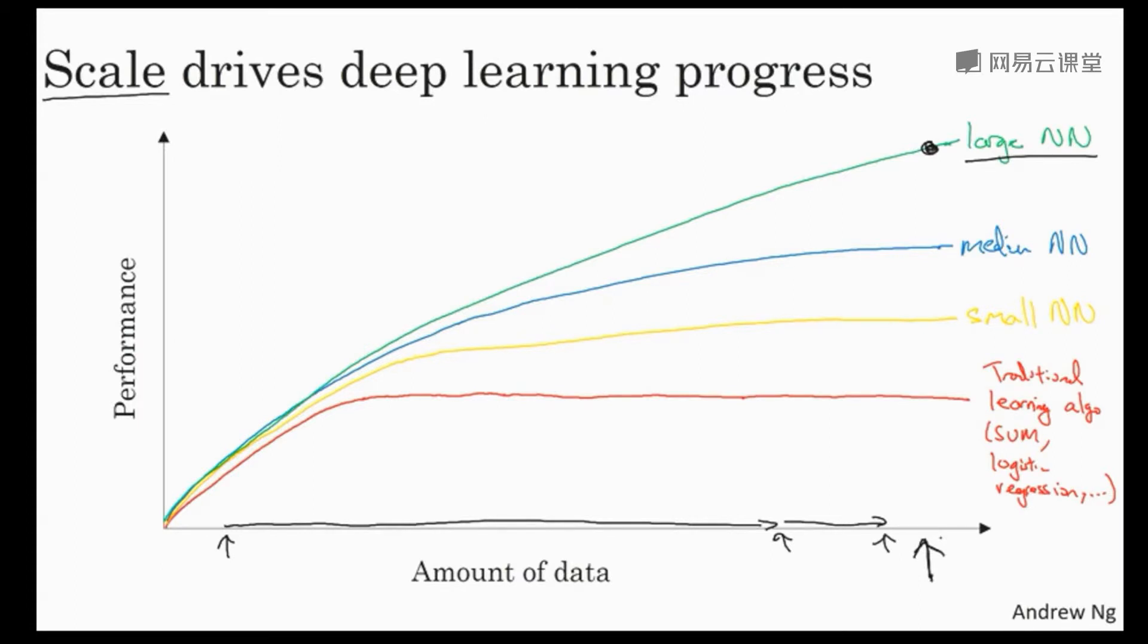In order to make this diagram a bit more technically precise, let me just add a few more things. I wrote the amount of data on the x-axis. Technically, this is amount of labeled data. Where by labeled data, I mean training examples where we have both the input x and the label y. To introduce a little bit of notation that we'll use later, in this course we're going to use lowercase alphabet m to denote the size of our training set. So the number of training examples is lowercase m, so that's the horizontal axis.